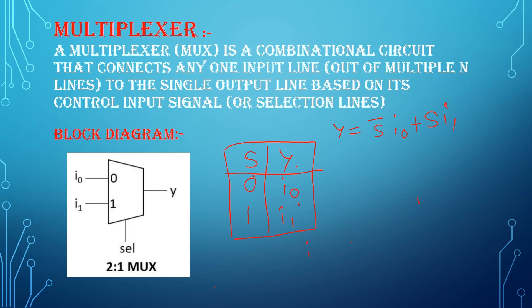So if s is equal to 0, I0 is connected to y. If s is equal to 1, I1 is connected to y. And this is the output expression for 2x1 multiplexer.